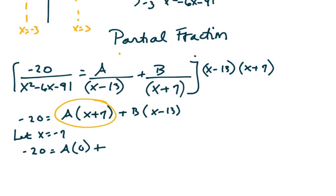Continuing with this, when x equals negative 7, I get negative 20 here. So b equals 1.